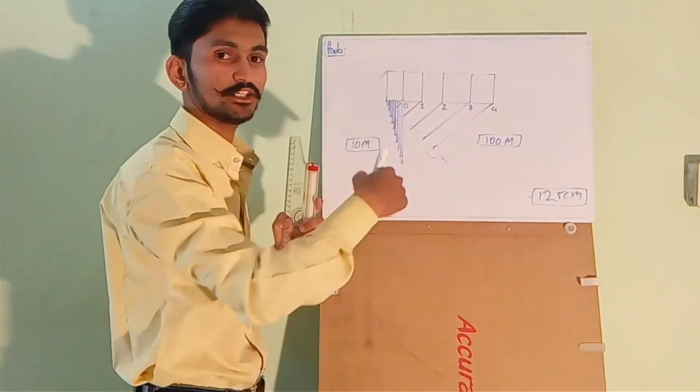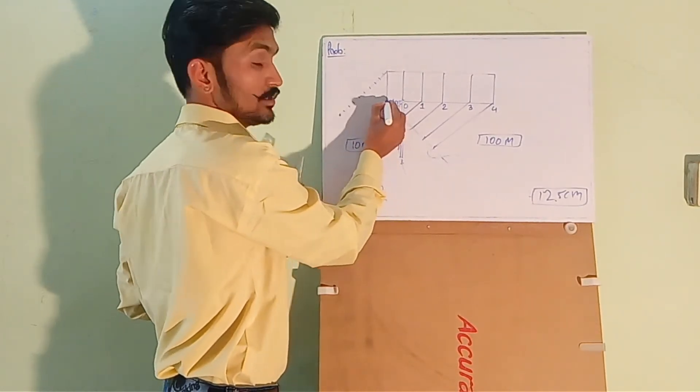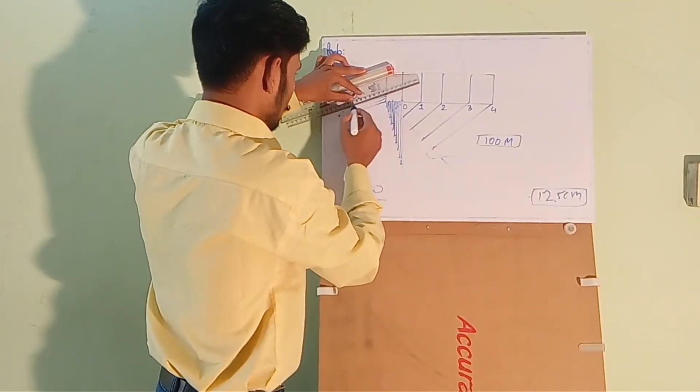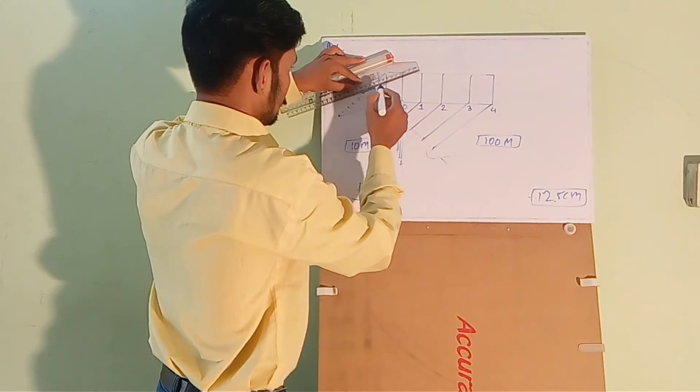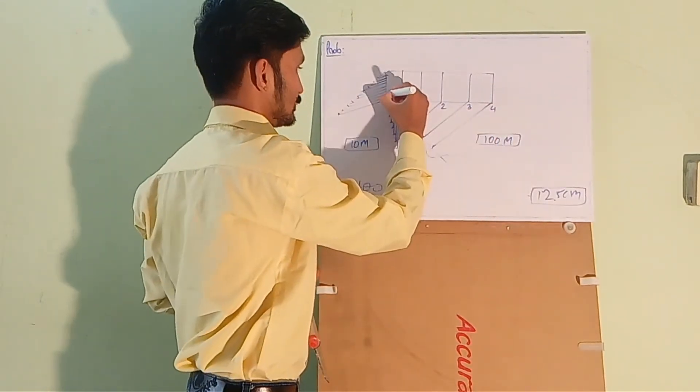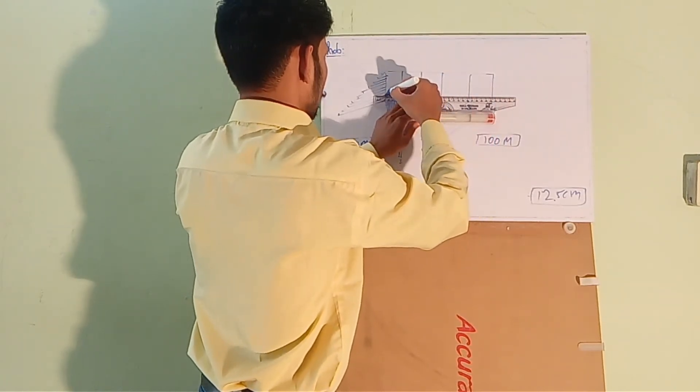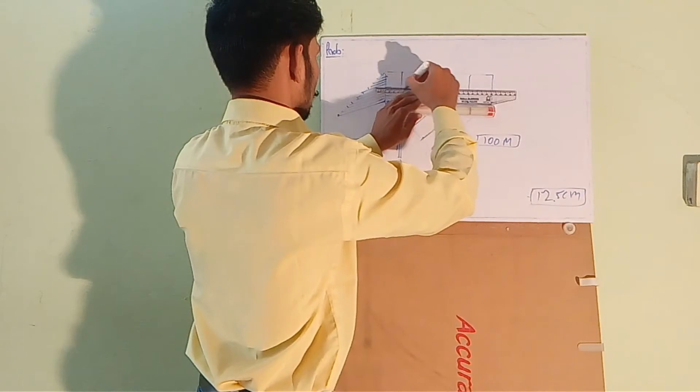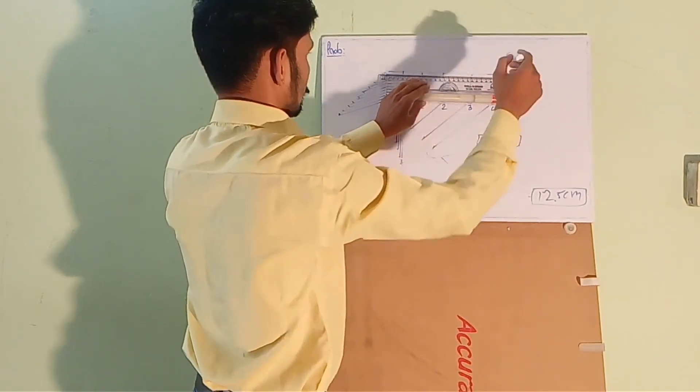Draw a line from here, divide this line into 10 equal parts, again 1, 2, 3, 4, 5, 6, 7, 8, 9, and 10, join this point to this point. Draw parallel lines. Now draw horizontal lines from each point.